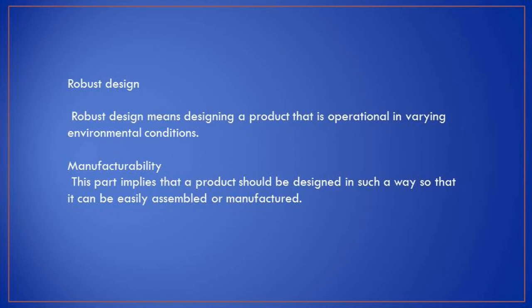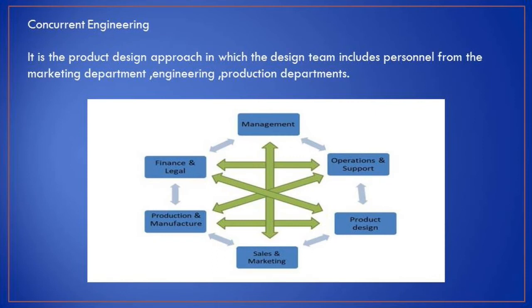Manufacturability implies that a product should be designed so that it can be easily assembled and manufactured — it means the capability to produce the product efficiently. Concurrent engineering is a product design approach in which the design team includes personnel from marketing, engineering, production, sales, finance, legal, and management departments — each department works in coordination with all others.